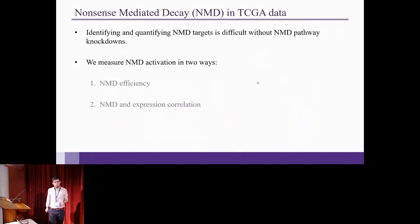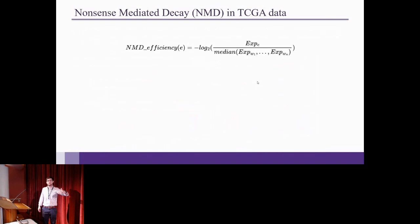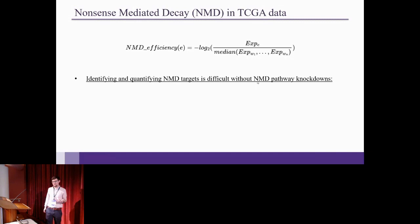But we want to know about NMD in TCGA data, and specifically we want to know whether or not there's exotron splicing events that are being targeted by NMD in a tumor-specific manner. So how do we identify and quantify NMD targets without NMD knockdowns? So I calculate NMD activation in two different ways. So one is NMD efficiency, which is basically the negative log two-fold change of the expression of exotron spliced genes compared to the median expression in wild-type samples that don't have the exotron splice. This is the kind of NMD efficiency calculation that's used in other papers that try to calculate NMD efficiency.